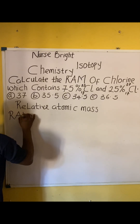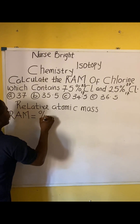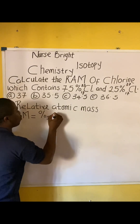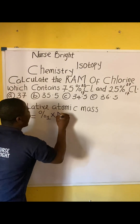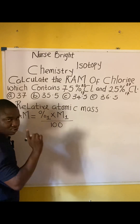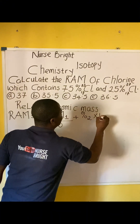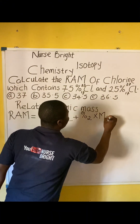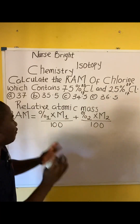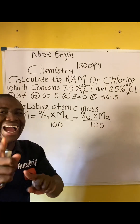The formula for relative atomic mass — written in short as RAM — is: RAM = (percentage one × M1) / 100 + (percentage two × M2) / 100. This is the formula we need to solve this question, and I'll be guiding us through on what to do.